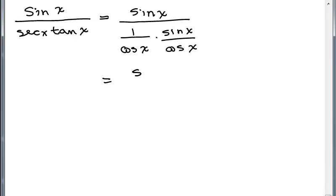Nothing cancels in the denominator. So I basically have sine of x over sine of x over cosine squared x.